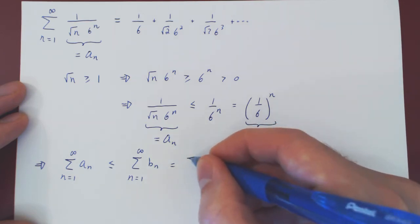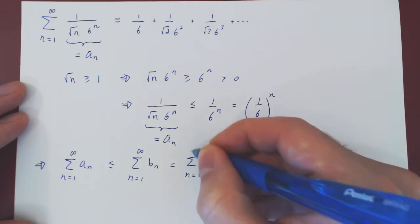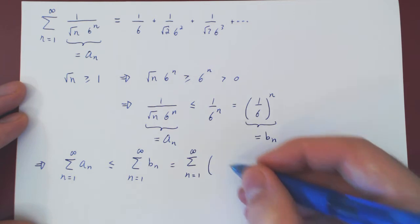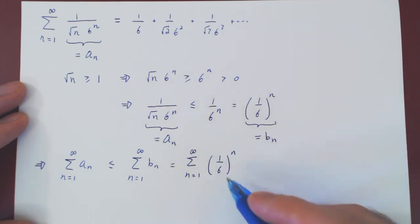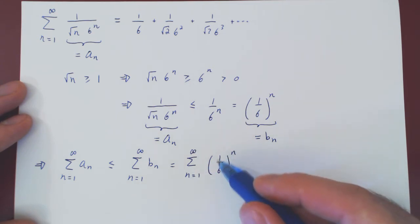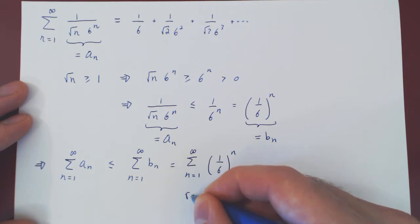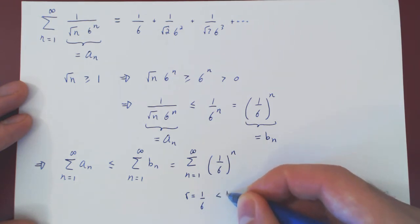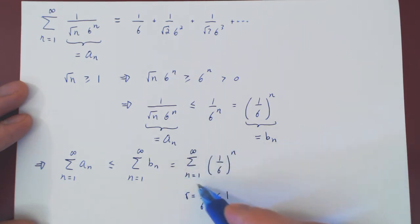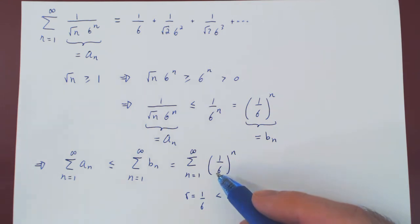But we know exactly what happens in this series, or at least we should know. As this is now a familiar geometric series, so we are summing, from 1 to infinity, consecutive powers of 1 over 6. This is now a geometric series, where r is equal to 1 over 6. And in absolute value, this is still 1 over 6, which is clearly less than 1. So we have a convergent geometric series, therefore this is simply a real number, so it is less than infinity, it is finite.